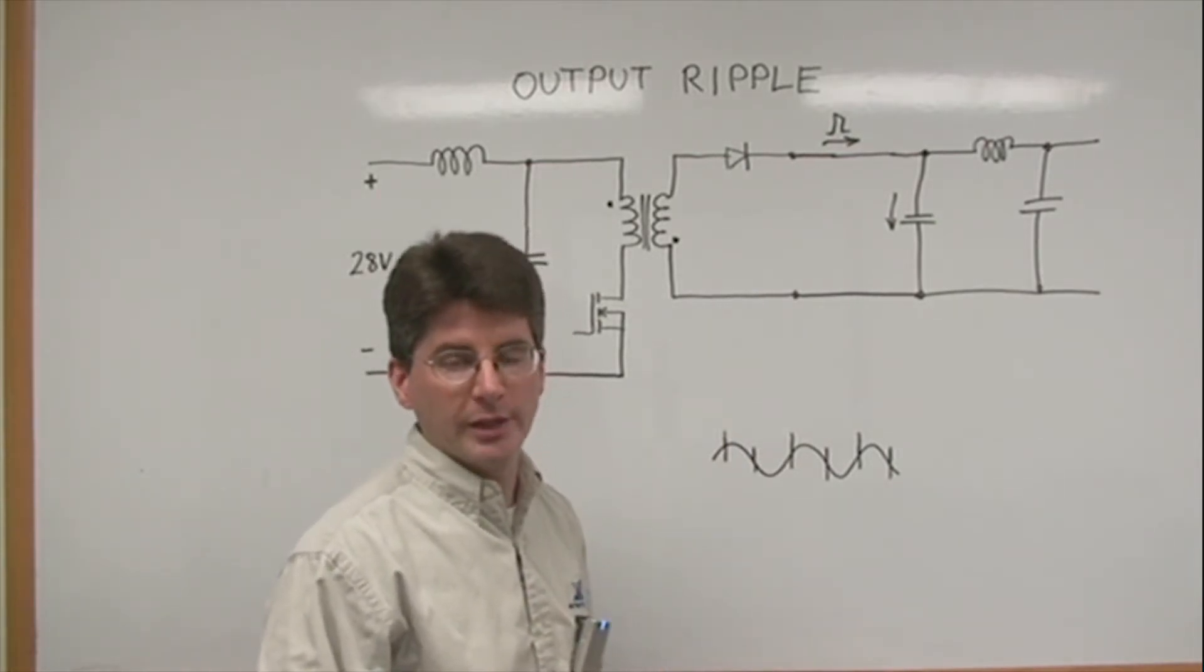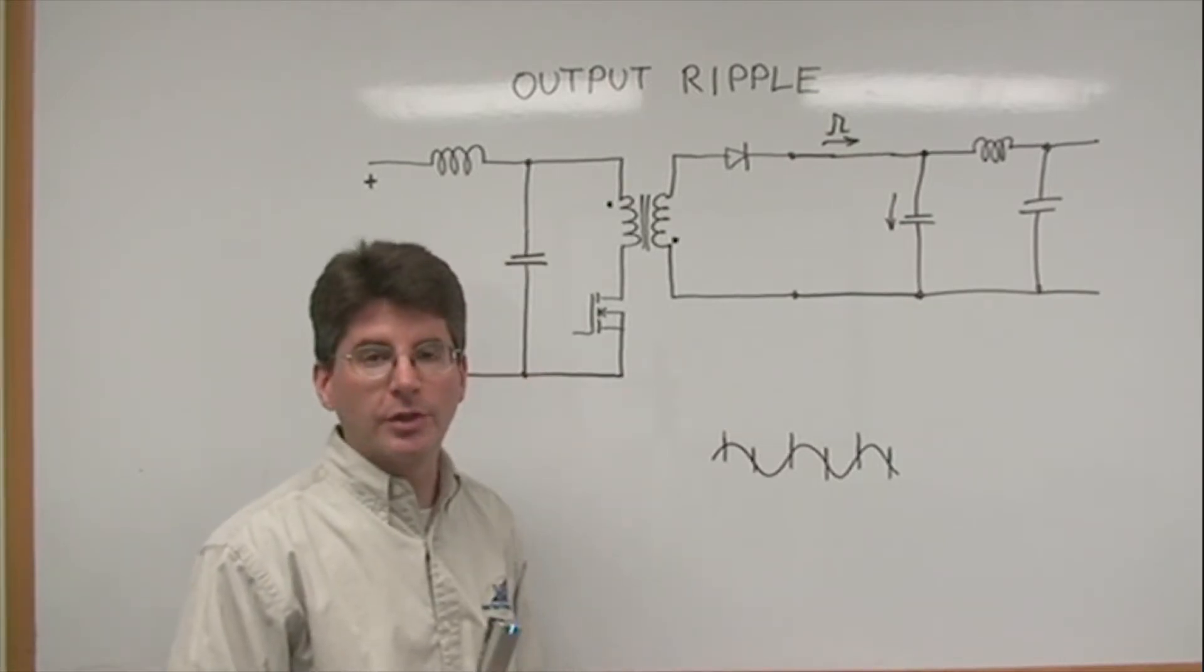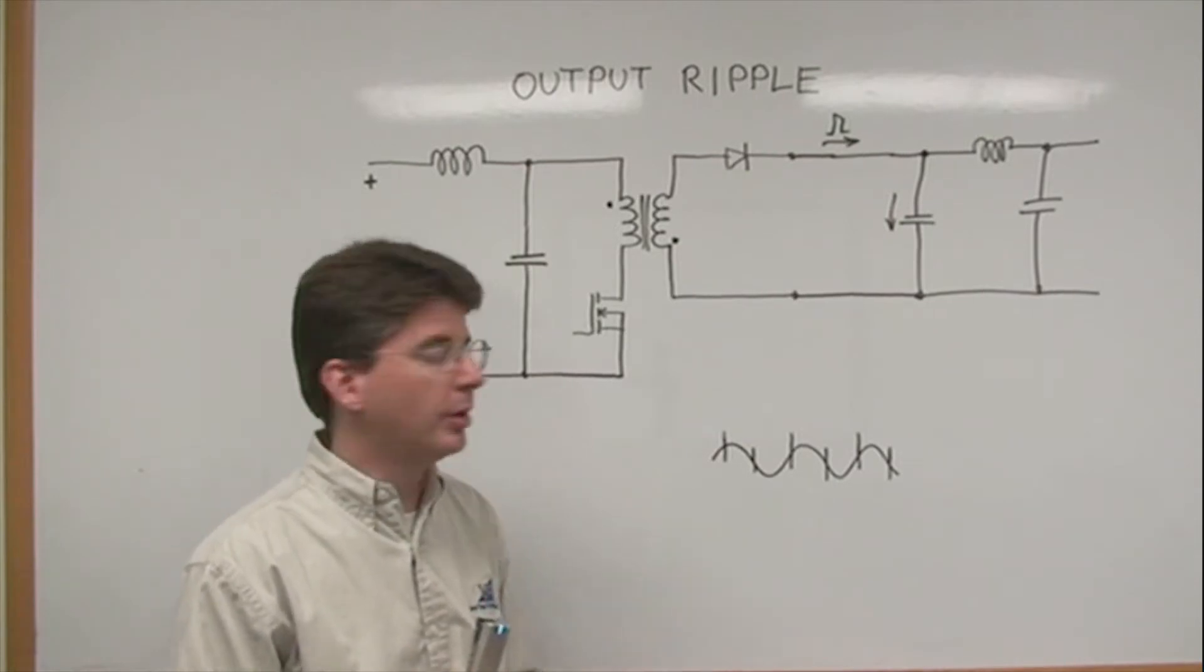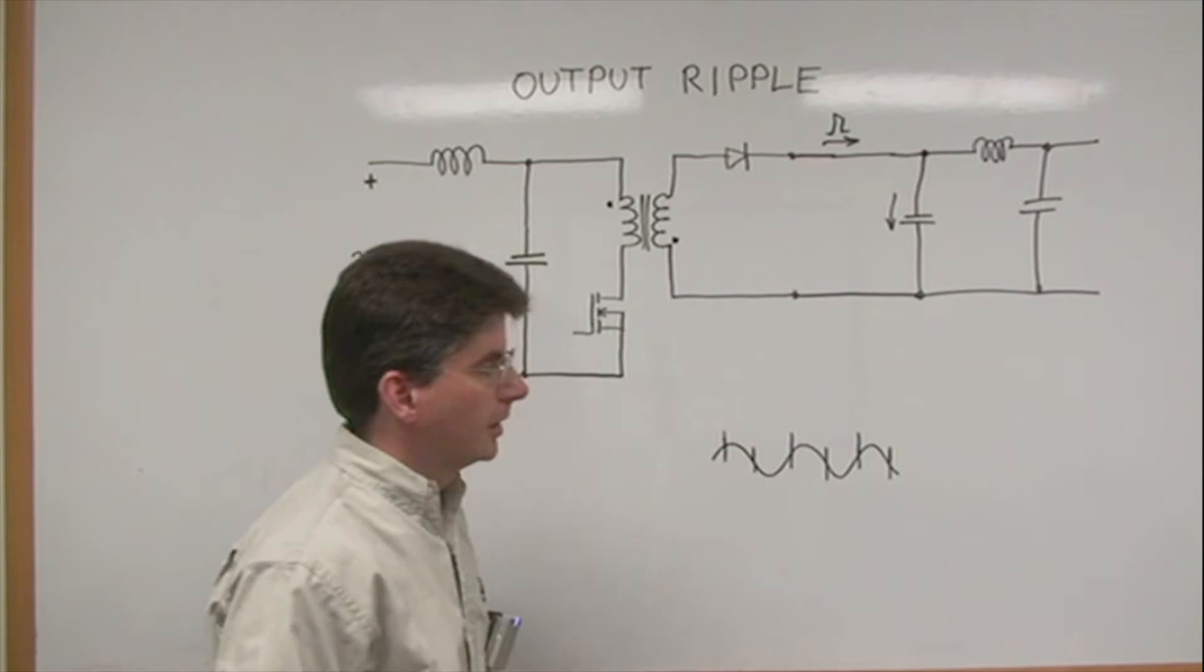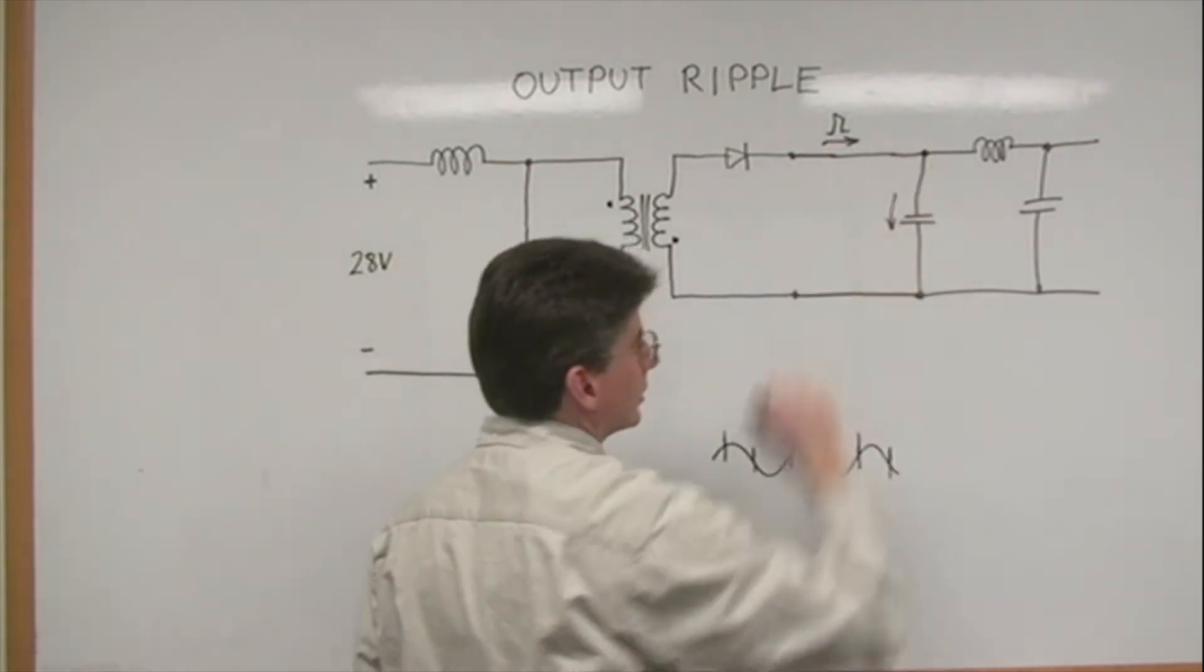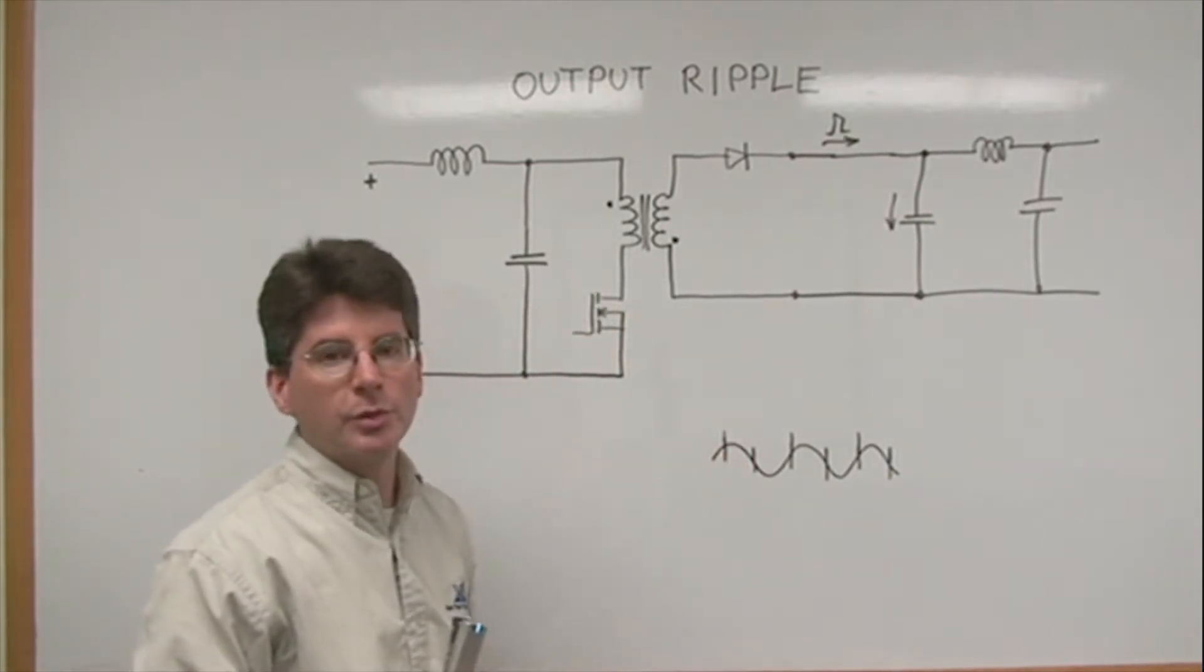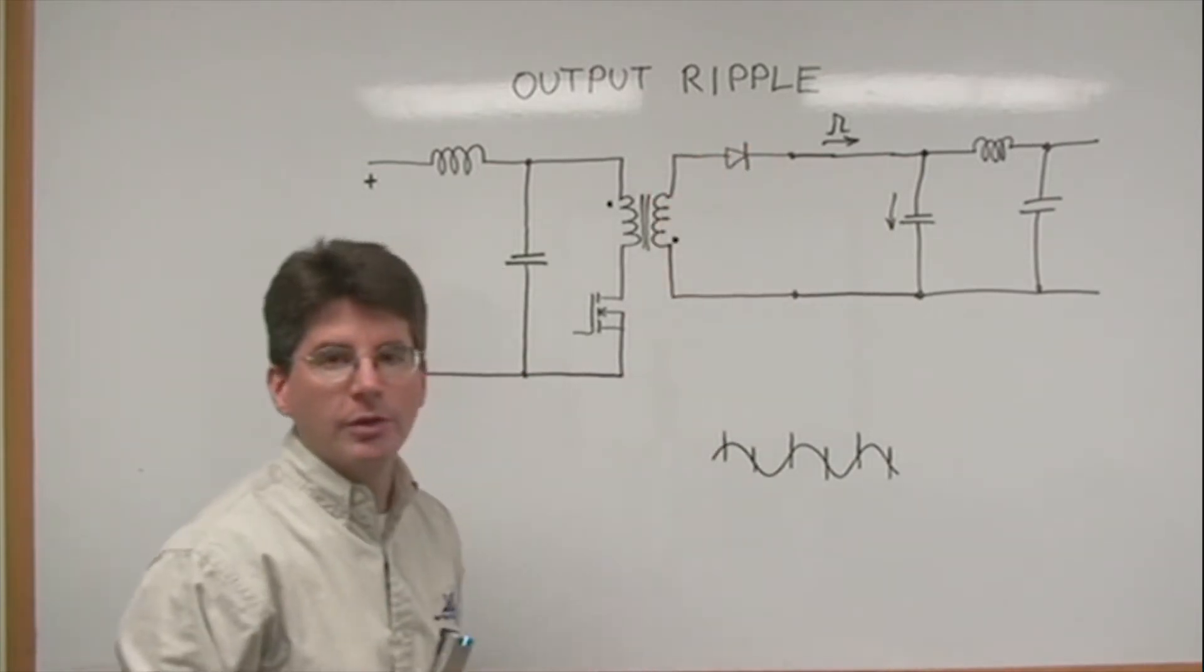Output ripple of the DC-DC converter can include both differential mode and common mode components. The usual waveform will look something like this. It will include a sinusoidal component, which is due to this current flowing in this capacitor.